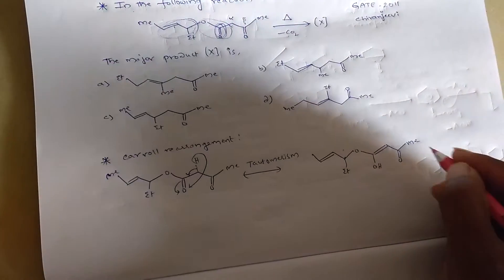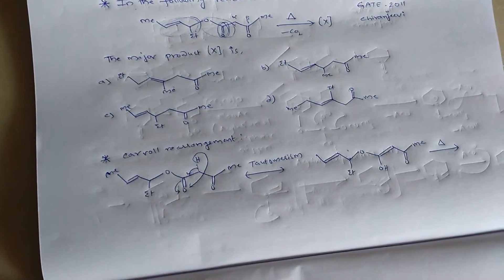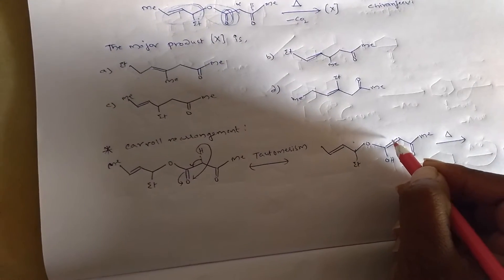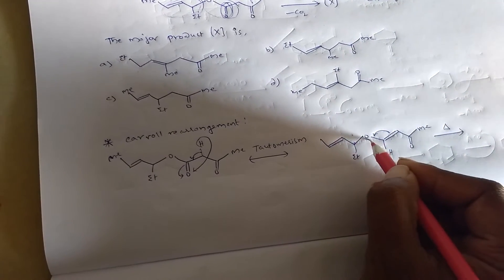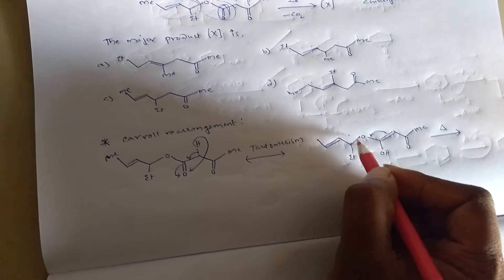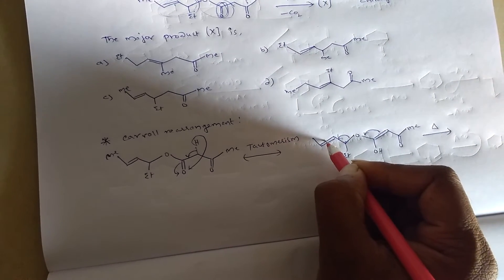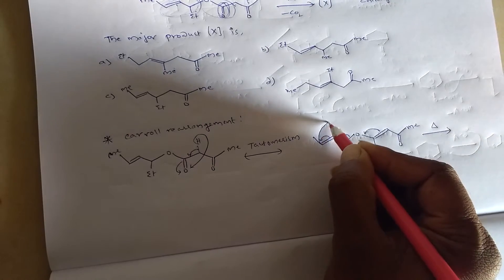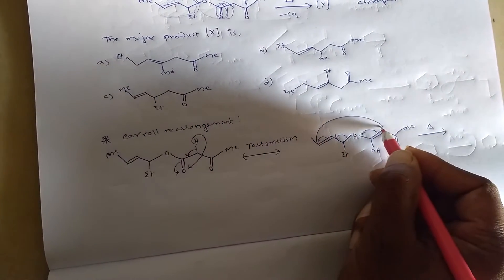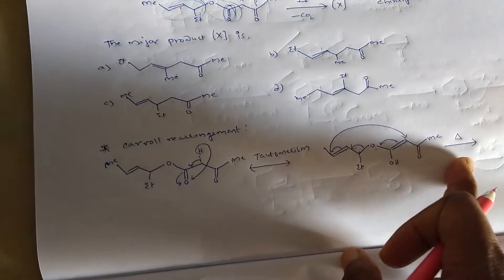On further heating of this compound, double bond goes towards this oxygen. And then it moves towards it. And then this double bond here. And this double bond goes on towards this. This rearrangement takes place in Carroll's rearrangement on heating.